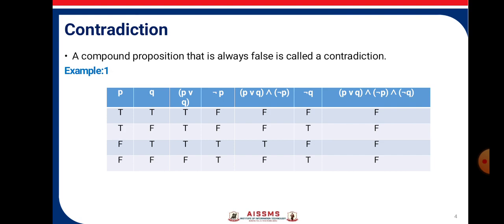Consider the example: P has the truth values T, T, F, F and Q has the truth values T, F, T, F. P or Q gives T, T, T, F. Negation of P is F, F, T, T. P or Q and negation of P gives F, F, T, F. When we perform the AND operation of (P or Q) and (negation P and negation Q), we get F, F, F, F. As we get all the truth values as F, it is contradiction.